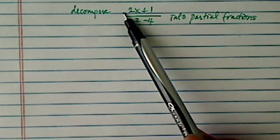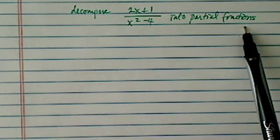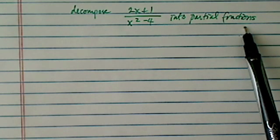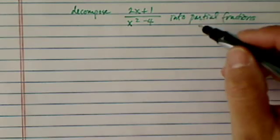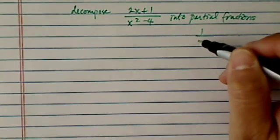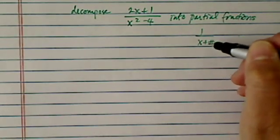Decomposing a division of this polynomial into a partial fraction is very important for integration. When we integrate this one, unless we have 1 over x plus a number form, we can't integrate easily.